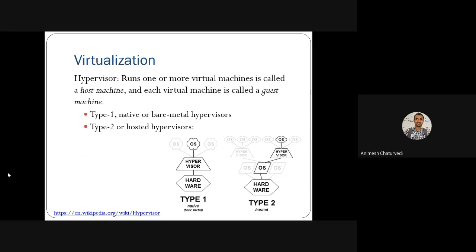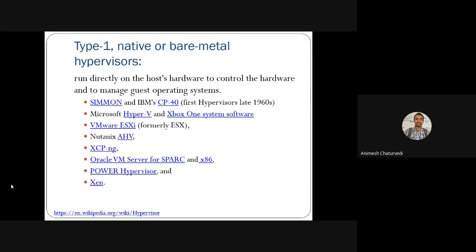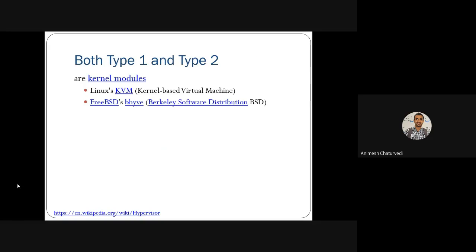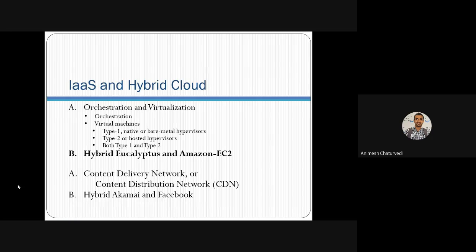We had seen virtualization with the hypervisor. The hypervisor could be of two types: Type 1 and Type 2. Type 1 hypervisor means bare-metal deployment, and Type 2 is a hosted hypervisor. These are examples of Type 1 hypervisors, and then we had seen Type 2 examples of hypervisors as well.